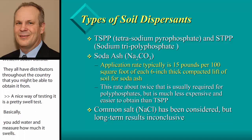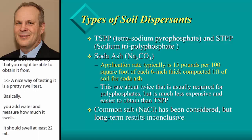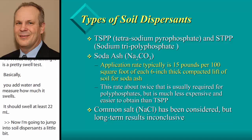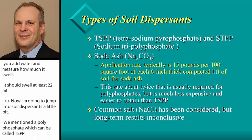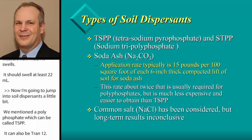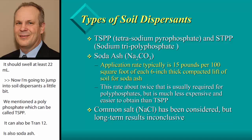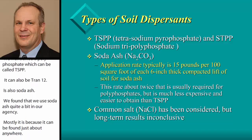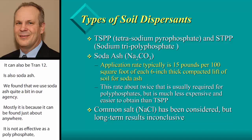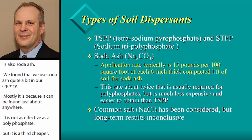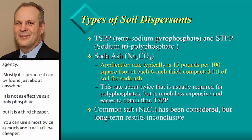For soil dispersants, we mentioned polyphosphates — which can be called TSPP and STPP — and also soda ash. We use soda ash quite a bit in our agency, mostly because it can be found just about anywhere. It's not as effective as polyphosphates, but it's about a third cheaper, so you can use almost twice as much and still be cheaper. Common salt can also be used as a dispersant, but we do not allow it in our practice standards, as long-term results are inconclusive.